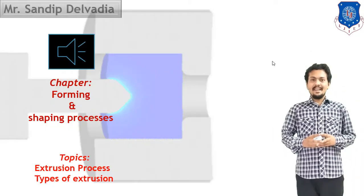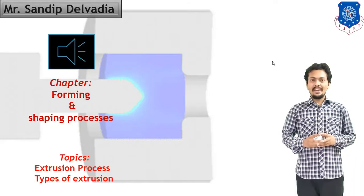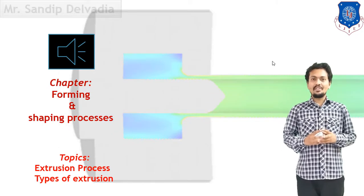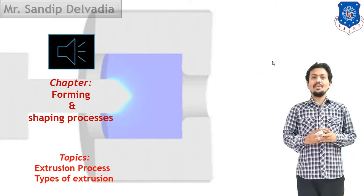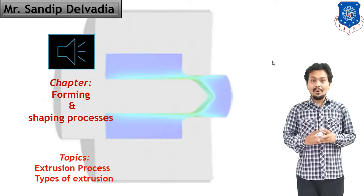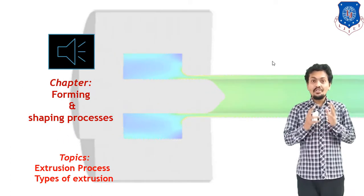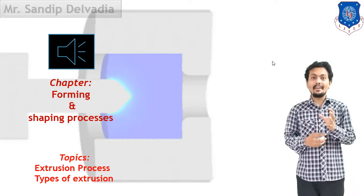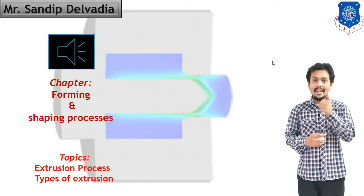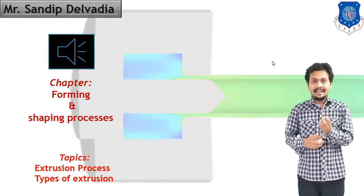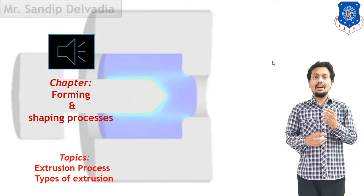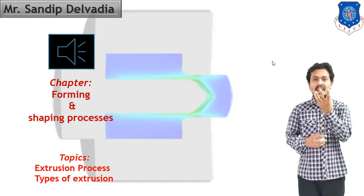Hello students. In manufacturing technology we have been going through forming and shaping processes. In forming and shaping processes, our purpose is to change the shape of metal or any component. So in any process under the category of forming and shaping, any component will undergo a shape change.